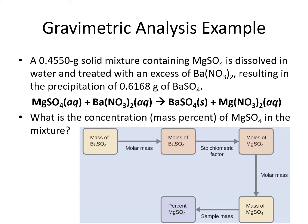Remember that 0.4550 grams is not the mass of magnesium sulfate — it's the mass of the whole mixture. We want to find the mass coming from just the component, which is magnesium sulfate. We can take our calculated mass of the component and divide by the mass of the whole thing times 100, and that gives us mass percent.